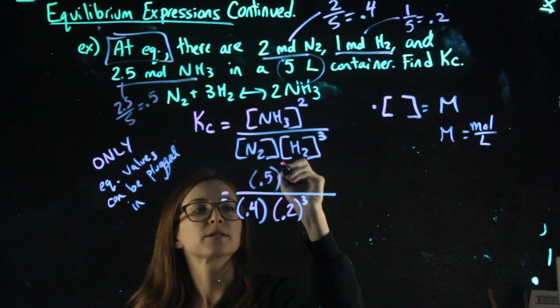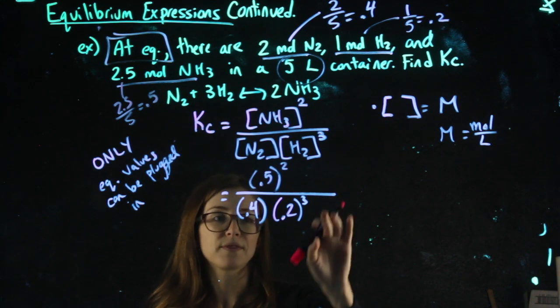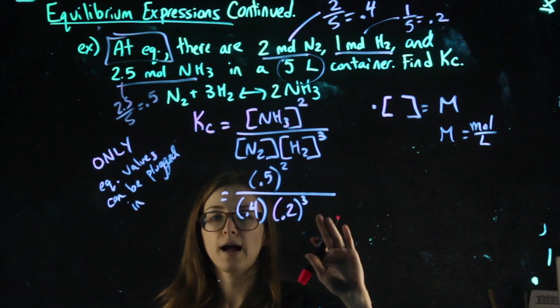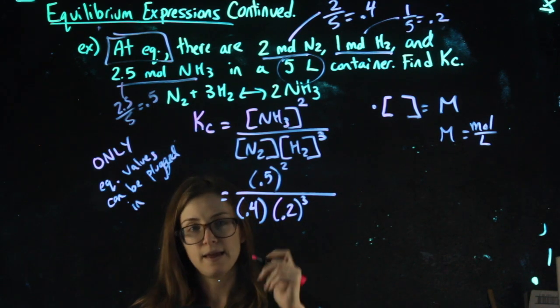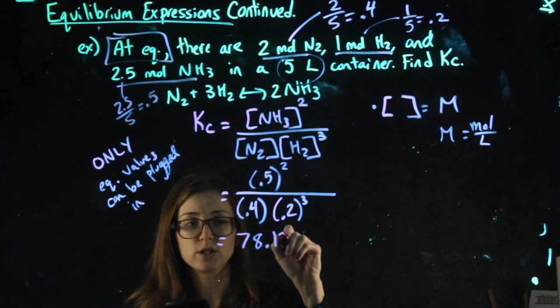My equilibrium expression says to square it. When you type this on your calculator, make sure you have parentheses around the whole denominator, or solve the numerator and the denominator separately, and then get your answer. So you should get 78.125.